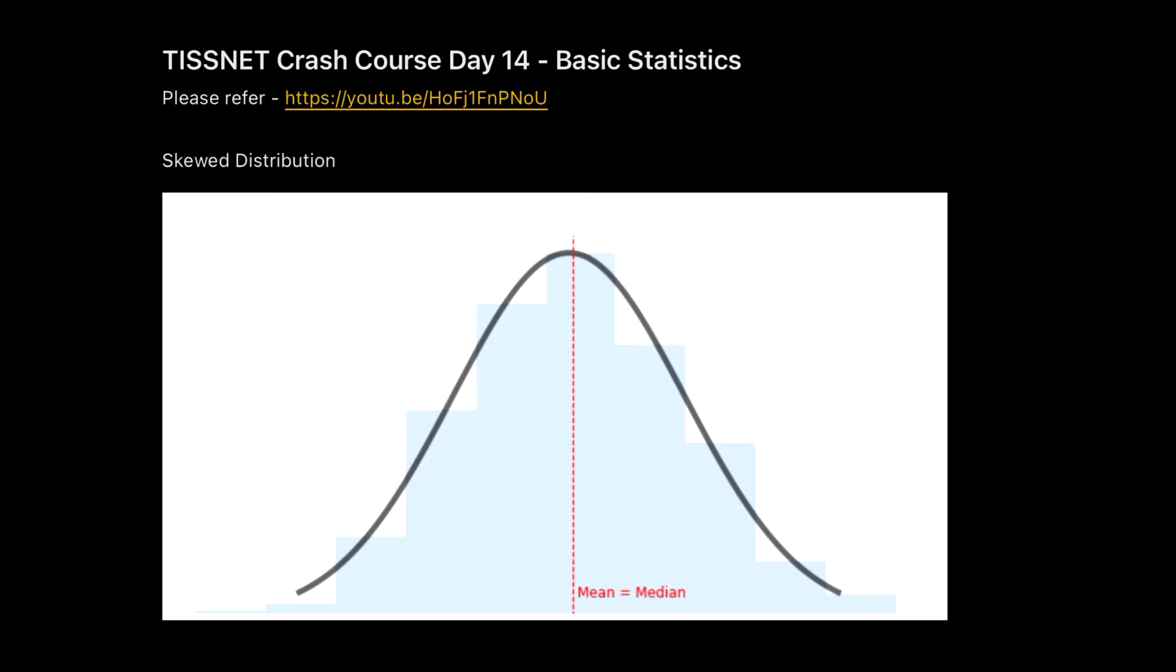So in basic statistics, we know a few things like we know what is mode. Mode means the highest frequency. So the one which has the highest frequency in a given data is the most frequent data and that most frequent data will be called as mode.